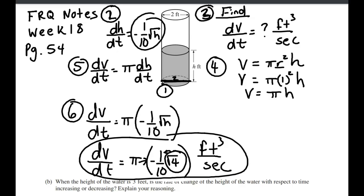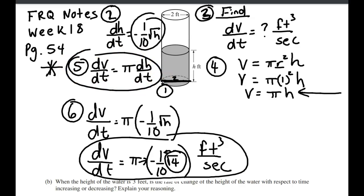So how would you be graded on this problem? When it comes to FRQs for these types of problems, there are two steps I guarantee they're going to give credit for. This is a two-point question. They're going to want to see the differential equation — that's where the calculus really starts. They're not going to give you credit for the formula itself, but you need it to get the differential equation. Then they give you another point for the answer, which likely includes the units.